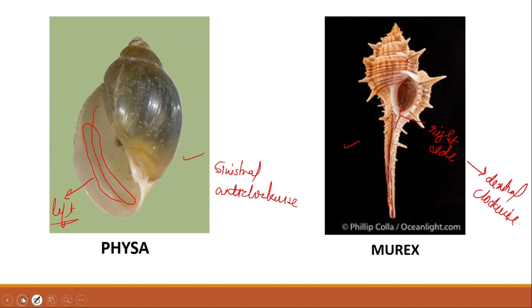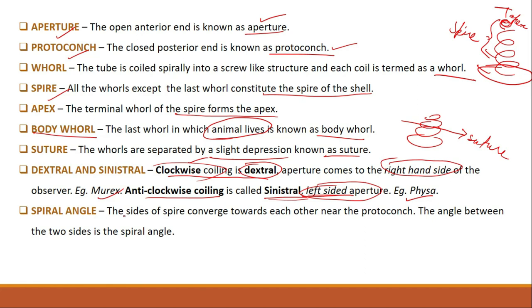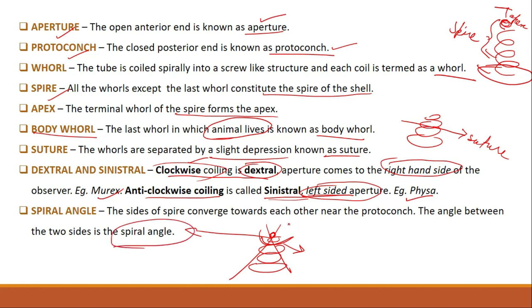The last term: spiral angle. The sides of the spire converge towards each other near the protoconch, and the angle between the two sides is known as the spiral angle. You may pause the video here and note down all these terms and definitions. In the next lecture we will be looking at the internal morphology of gastropods. Thank you.